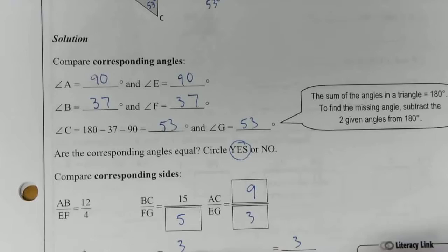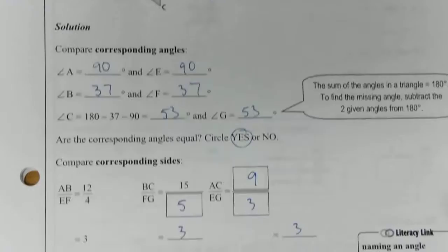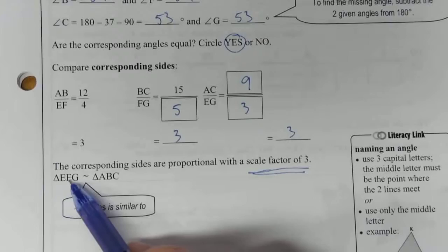It doesn't matter which side you compare. So that means that triangle EFG is similar—that's what this little tilde represents—it means it's similar to triangle ABC.